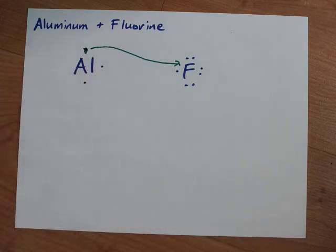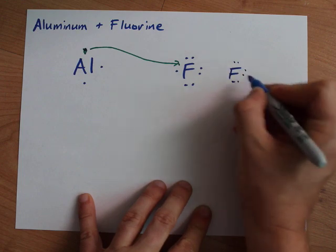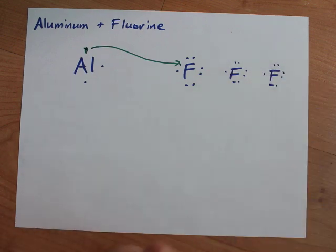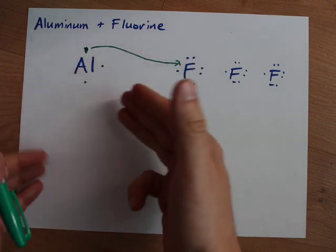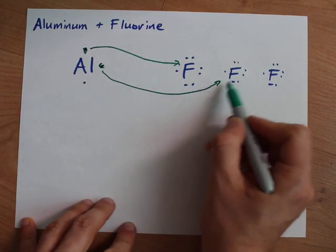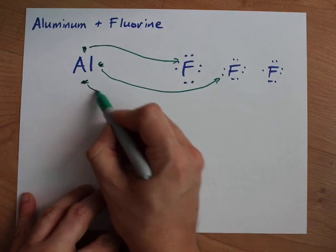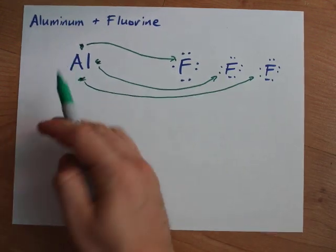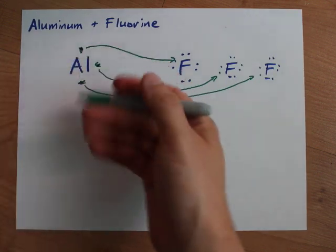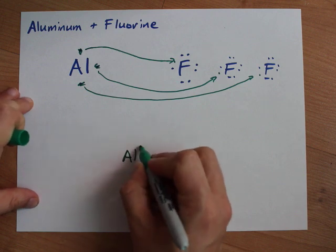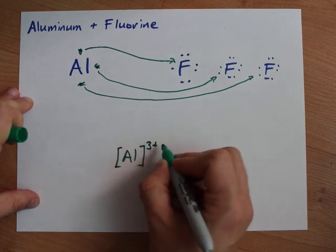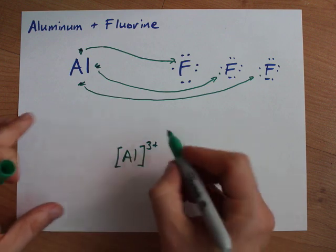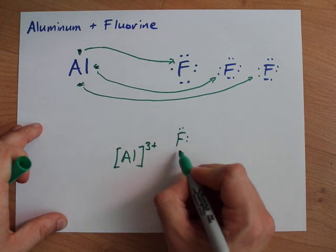The only way aluminum can donate those remaining electrons is if more fluorines get invited to the party. A second fluorine brings seven electrons, and a third fluorine brings seven electrons. Aluminum makes a little donation to give the second fluorine a full outer shell, and another donation to give the third fluorine a full outer shell. Finally, aluminum has an empty outer shell, meaning its next occupied shell is full. So aluminum has a 3-plus charge. In the Lewis structure, no electrons are written around it because it gave away all three.